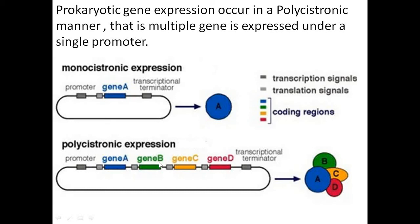Prokaryotic gene expression occurs in a polycistronic manner, meaning genes A, B, C, D are all located under a single promoter and a single promoter is responsible for transcription of all these genes. In contrast, monocistronic expression, usually seen in eukaryotes, has a single gene under a single promoter. In prokaryotes, multiple genes are located under a single promoter.